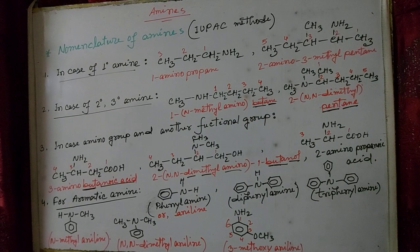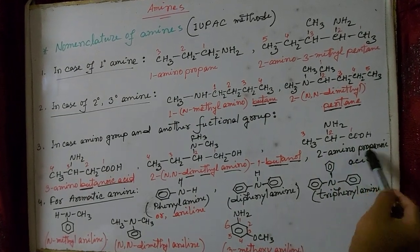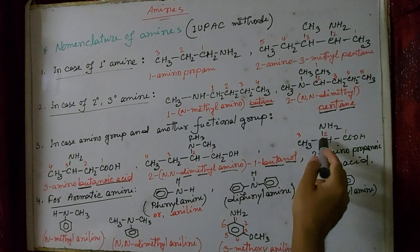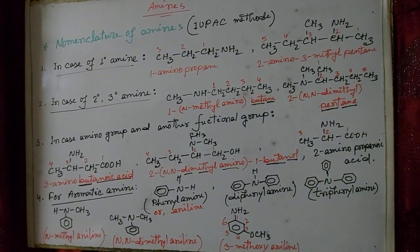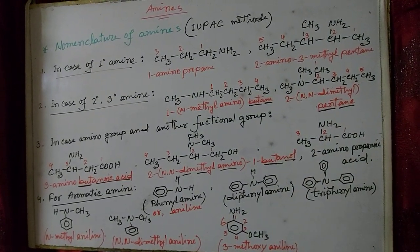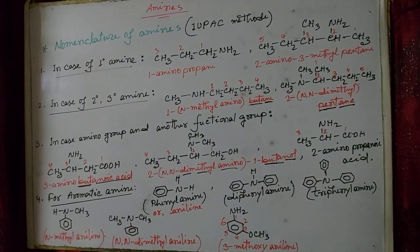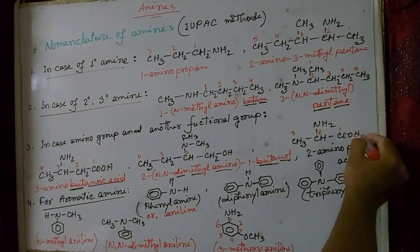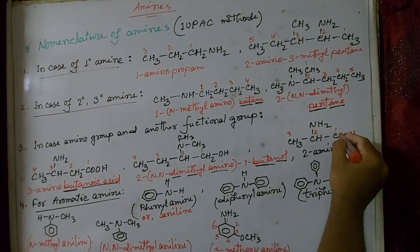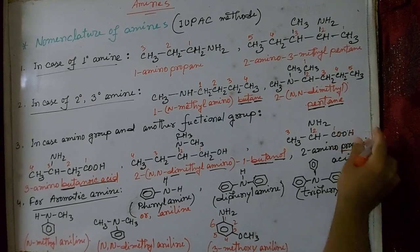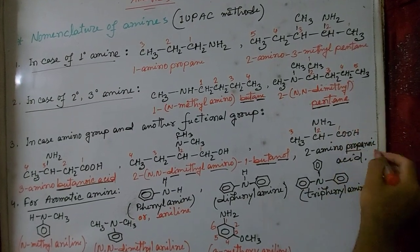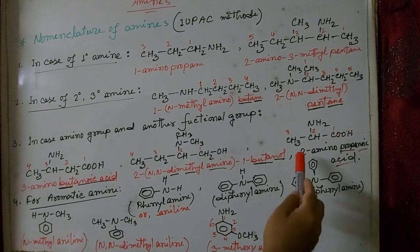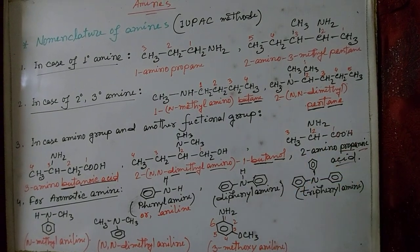This compound is 2-aminopropanoic acid. The amino group is at the 2nd position. There are three carbon atoms in the main chain, so it is prop-, and due to the COOH group it is propanoic acid. The resulting name is 2-aminopropanoic acid.